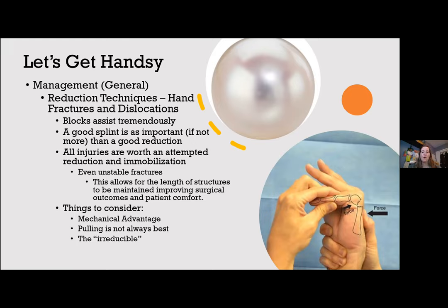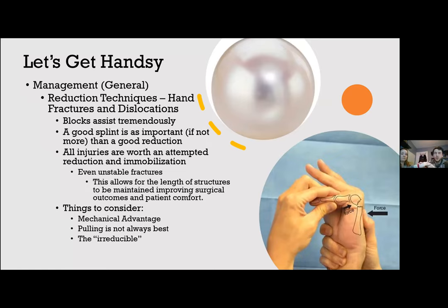Metacarpal fractures account for 40% of all hand fractures distal to the carpals and mainly occur in young men. Metacarpal neck fractures — the most common — are often called boxer's fractures, particularly over the 4th and 5th digit. A useful reduction trick: flex the MCP to tighten the collateral ligaments, since the MC head is ovoid — this lets you use the proximal phalanx to push up on the head. This same biomechanical principle can apply to head fractures of the proximal or middle phalanx.